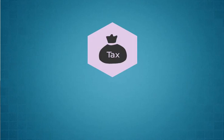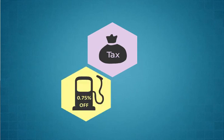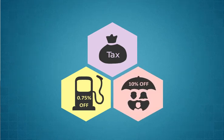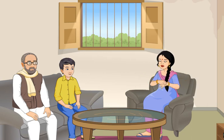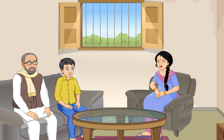Many discounts have been announced by the government to encourage digital payments. For instance, full exemption from service tax is provided if payment up to Rs. 2000 is made through digital modes. Moreover, 0.75% discount on fuel and 10% discount on insurance premiums of government insurers are also provided. An automated record is maintained in the transaction history, irrespective of the mode of digital payment.